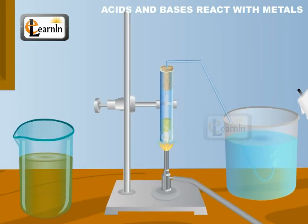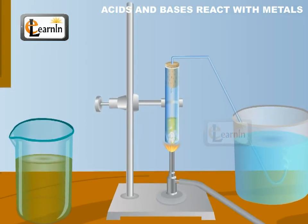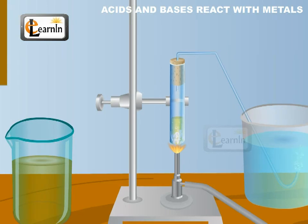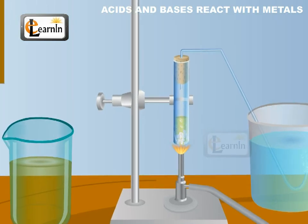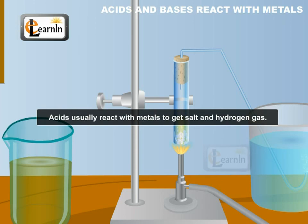However, such reactions are not possible with all metals. Thus, through this activity we can understand that the products of the reactions between acids and metals are usually salt and hydrogen gas.